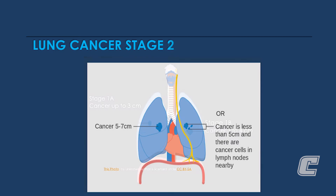This slide shows examples of stage 2 lung cancer. The right lung has a tumor that is 5 to 7 centimeters, and the left lung has a tumor that is less than 5 centimeters but involves the local lymph nodes in the left lung.